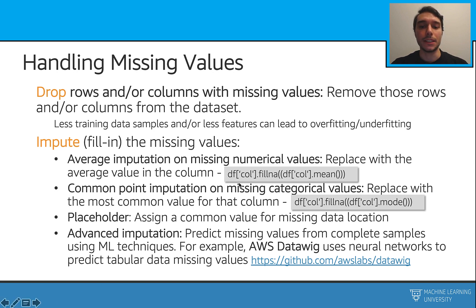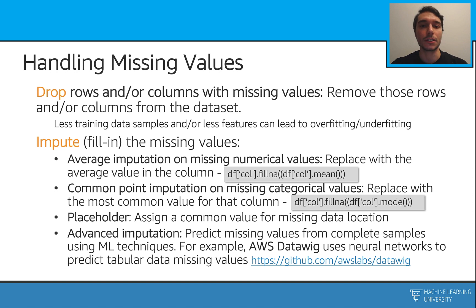Simply in data frames, we can give the name of the column and call the fillNA function. Another thing we can do if we are dealing with a categorical variable is to use common point imputation. In this one, we simply take the most common value in that column — again, it's the categorical column — and we just use that number as our fill-in value.